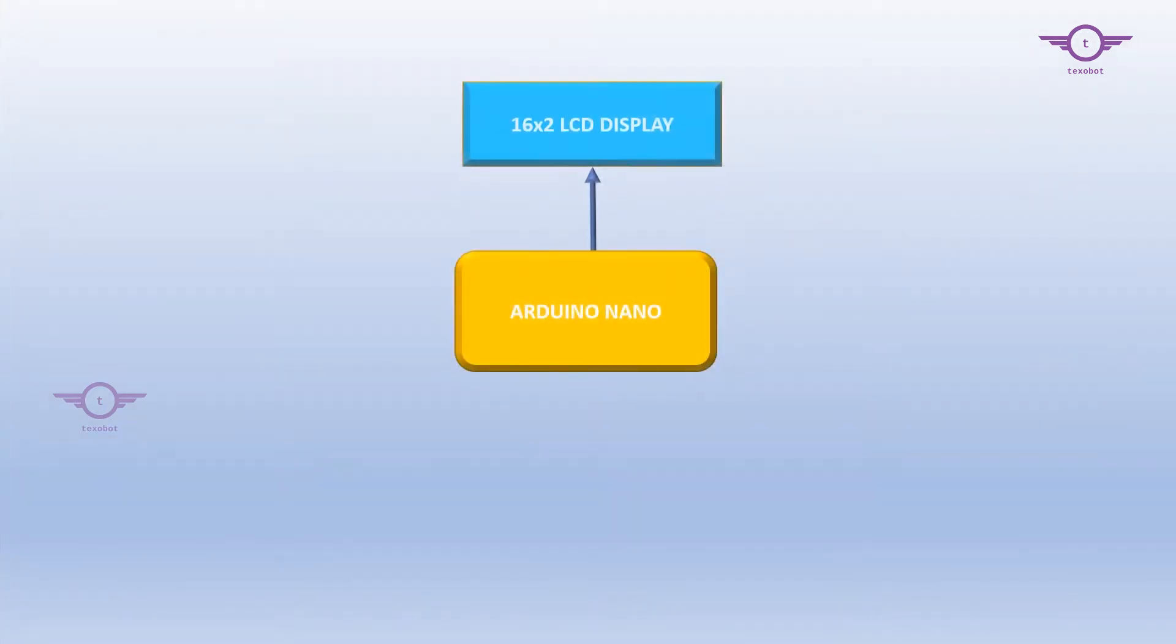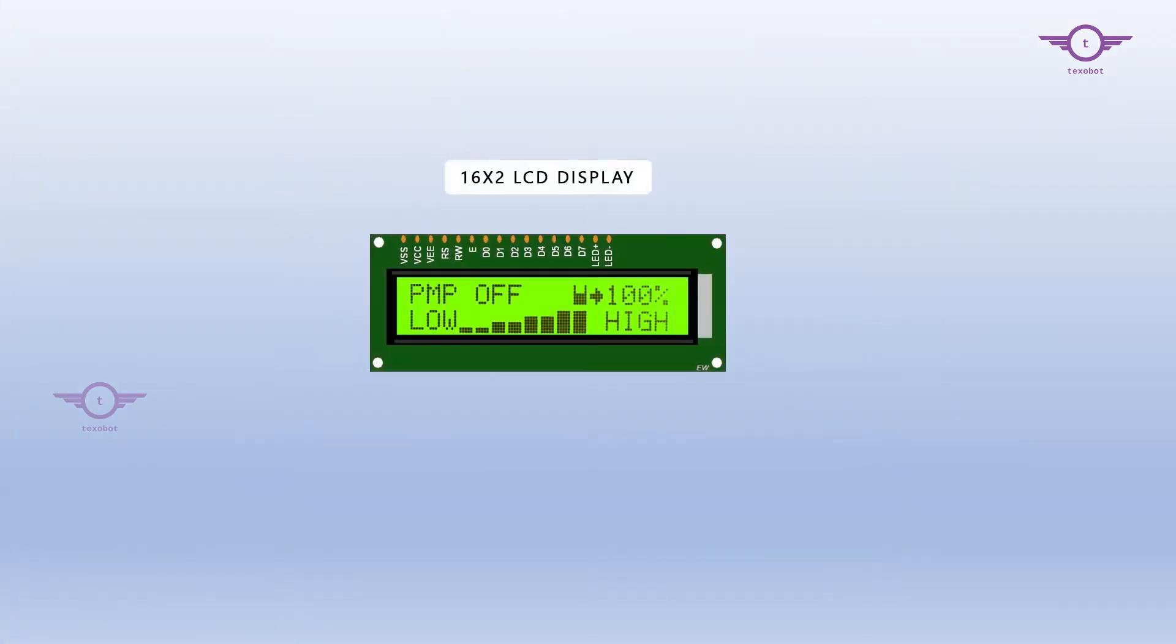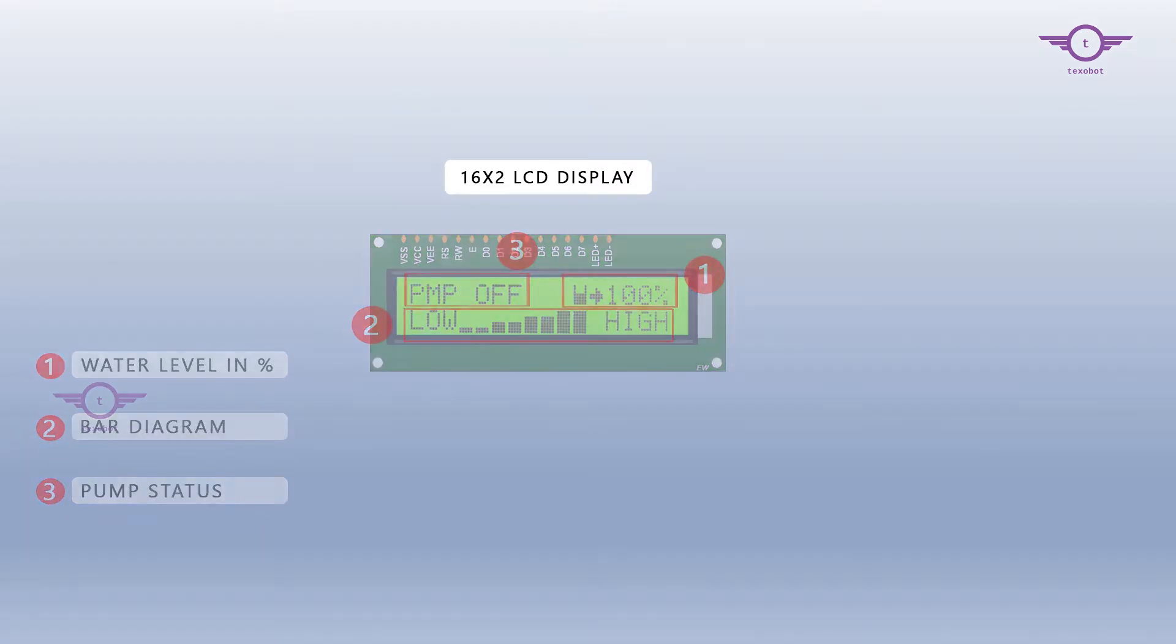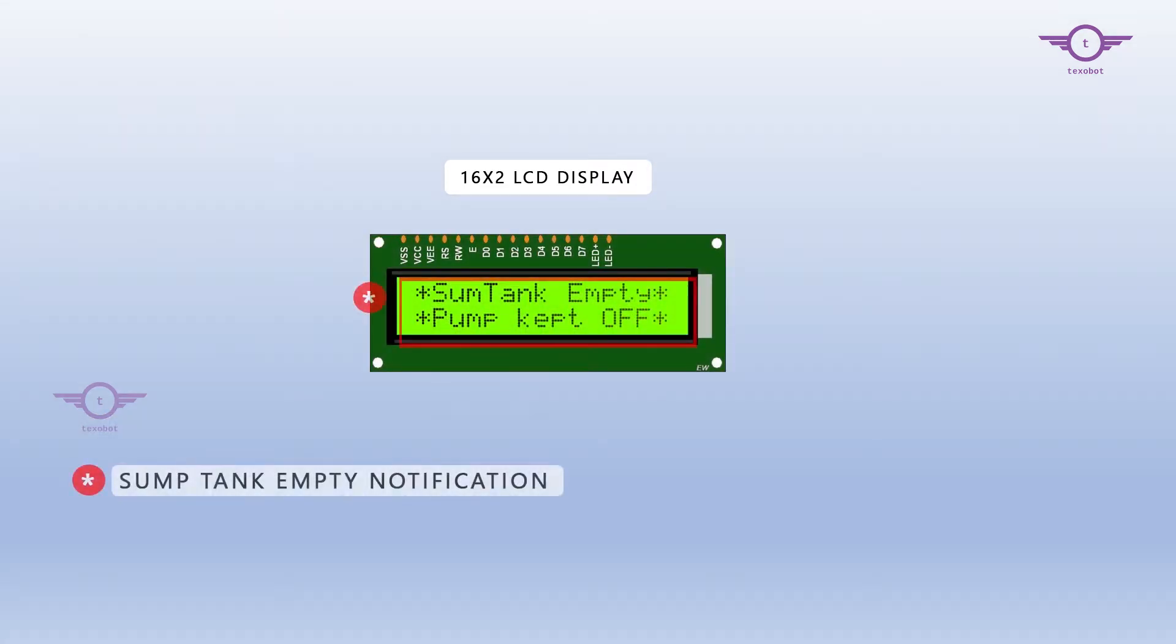The second block is the 16x2 LCD display. This unit will display the water level in percentage as well as in bar diagram. It will also show the pump status. This section will also notify us whenever the sump tank is empty.